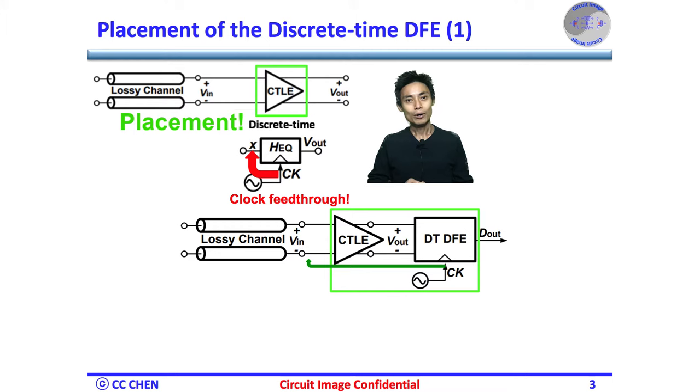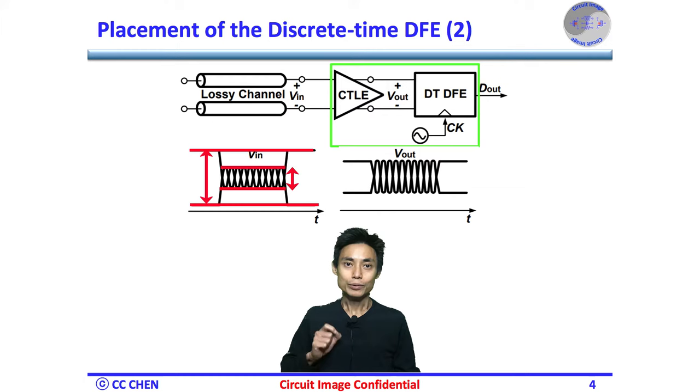Last time, we tried to put the CTOE at the front end, which is right after the channel. Since the clock feedthrough from the discrete-time equalizer could be a concern to interfere with the input signal of the RX front end and some reflections kicking back to the RX, if the discrete-time DFE was placed after the CTOE, the clock feedthrough to the RX front end can be minimized.